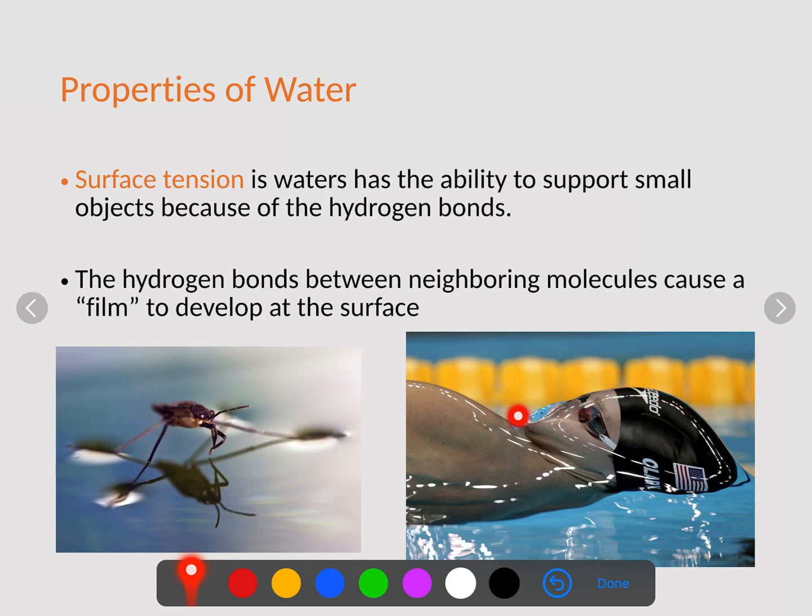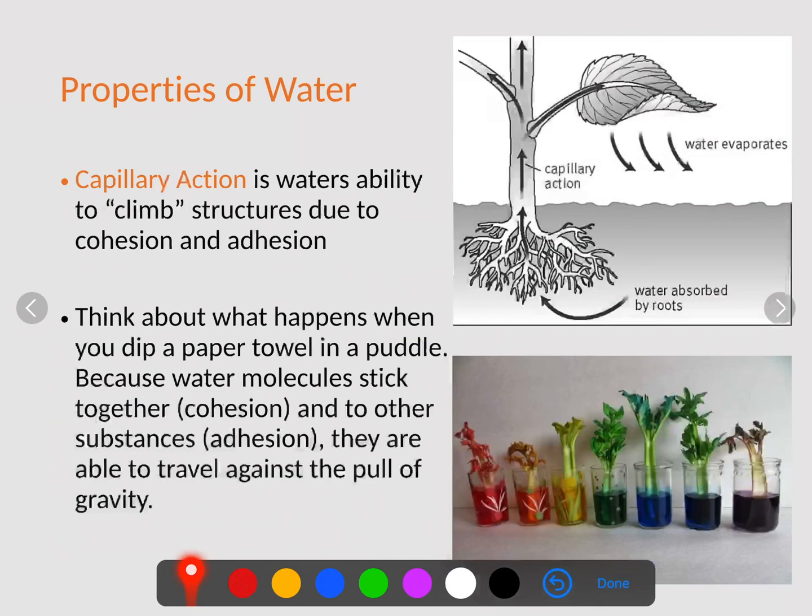Now this swimmer here has not yet breached the surface tension in the water, which is why you see this really cool film occurring over her as she's coming up to breathe. So again, surface tension is water has the ability to support small objects because they stick together.